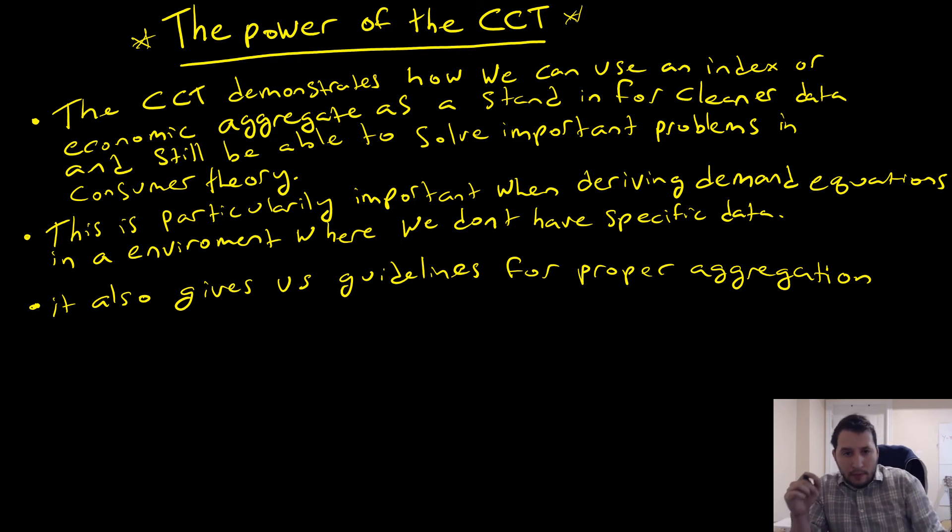Now, I just want to iterate this if it hasn't been clear already that the composite commodity theorem demonstrates how we can use an index or economic aggregates as a stand-in for cleaner data and still be able to solve important problems in consumer theory. This is particularly important when deriving demand equations in an environment where we don't have specific data. It also gives guidelines for proper aggregation, this being with reference to prices moving in parallel to each other, because you wouldn't necessarily have the same sort of optimality conditions involved there.